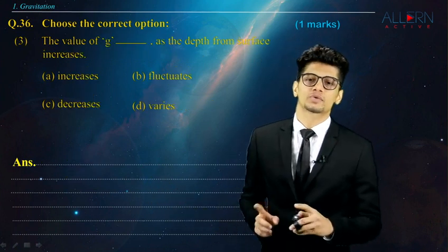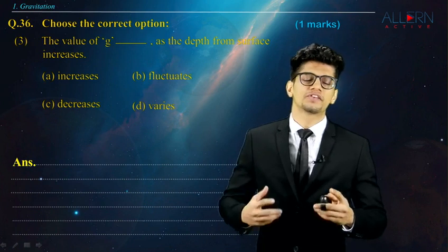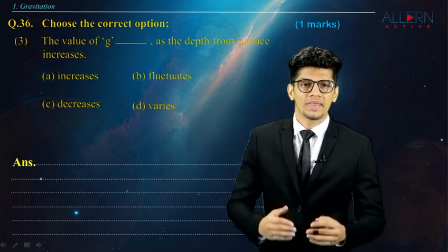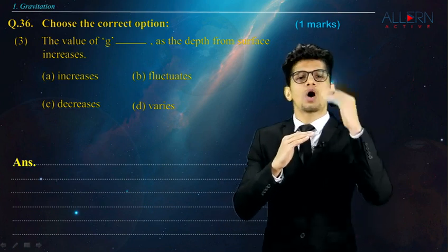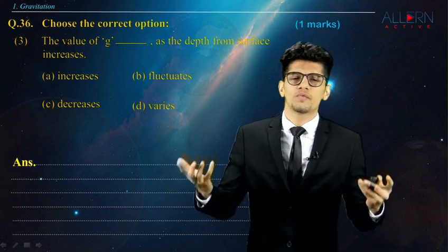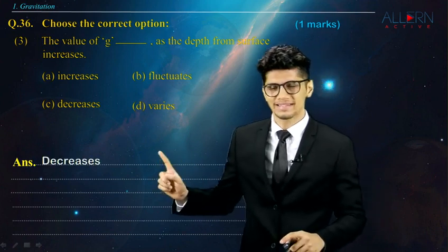Moving on to the next question. The value of g dash as the depth from the surface increases. We know that from the surface of the earth, if we go up or we go down, the value of g obviously will decrease. So, correct answer is decreases.